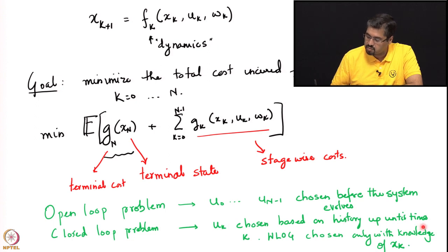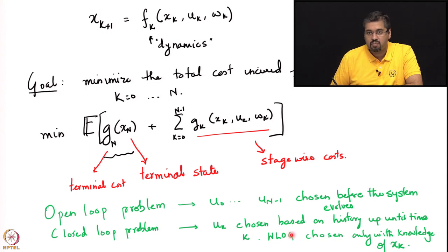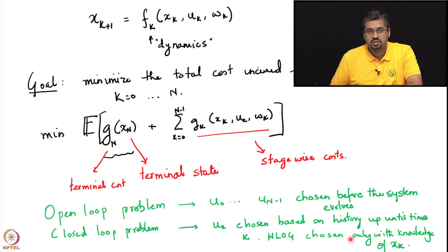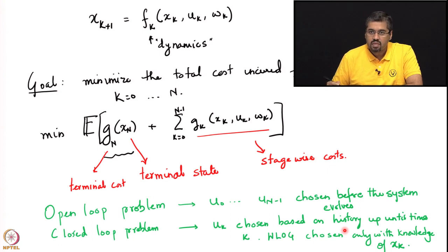u_k is chosen based on the history up until time k. Without loss of generality, one can choose u_k with only the knowledge of x_k. Often in these problems one does not need to consider the entire history up until time k, because it is sufficient to know only the state at time k. The state of the system is supposed to capture all the essential information about the system's configuration, and it also determines the cost incurred. Thus it does not benefit one to have more information than just the state, but this fact needs a proof, which we will look at now.